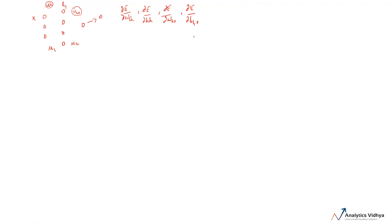We'll be using a technique called a computation graph to find out these values. This is what systems like TensorFlow, Caffe, and Theano use to automatically calculate gradients. The computation graph is nothing but a series of operations you take to reach from input to output, where every single operation is written independently so that gradients can be calculated.